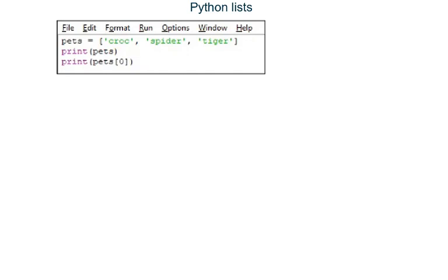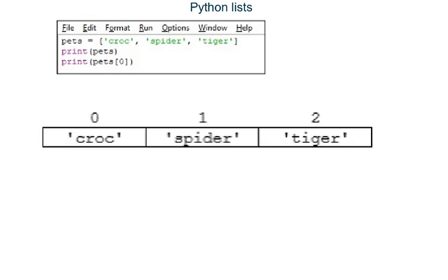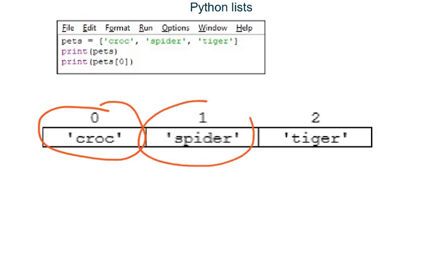If you have watched the video about Python strings, then you know that in a string the first character is at index position 0, the second character is at index position 1, and so on. The same counting method applies to lists. So in this program the string 'croc' is at index position 0, and the string 'spider' is at index position 2.